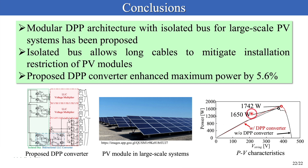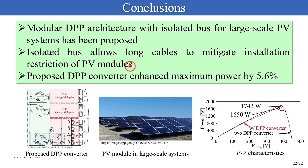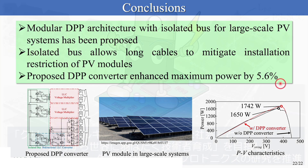Conclusions. I have proposed a modular DPP architecture with an isolated bus for large-scale systems. Since DC current flows through the isolated bus, installation restrictions of PV modules are mitigated. The experimental verification demonstrated that the proposed DPP converter enhanced maximum power by 5.6%. Thank you for your attention.